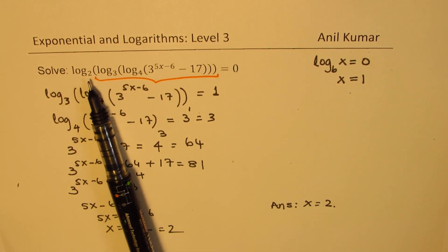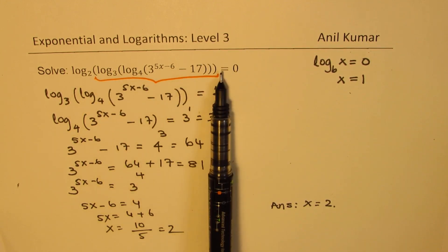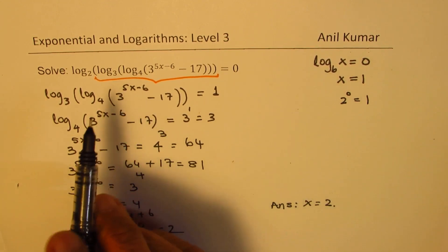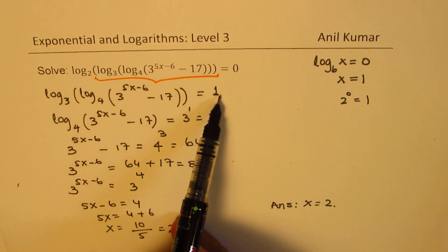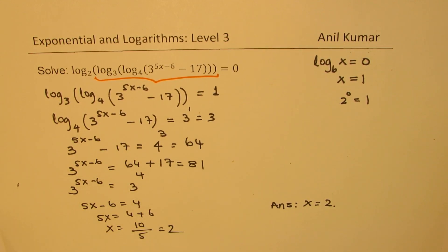You can also convert this to exponential form. You can write this as 2 to the power of 0, which is 1, and therefore all this is equal to 1. Then follow the same method to simplify and finally get your answer, which is x equals 2.